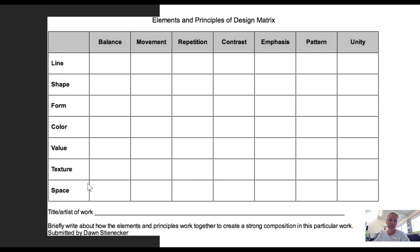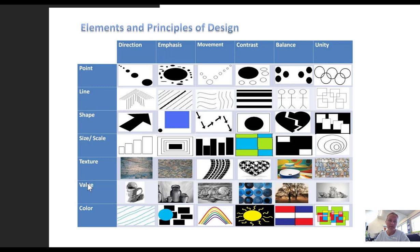This is an activity where we look at analyzing an existing design and try to find the elements of design that it has used and the principles. I'll show you an example of this. So in the first box we can see the element of point. It is being used to create the principle of direction, or the element of point being used to create the principle of emphasis. And so on. Movement, contrast, balance, unity.